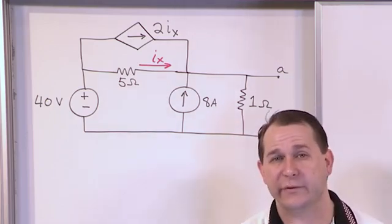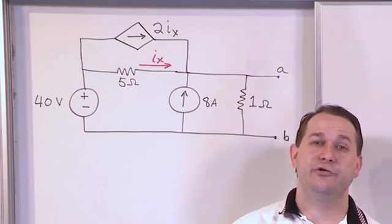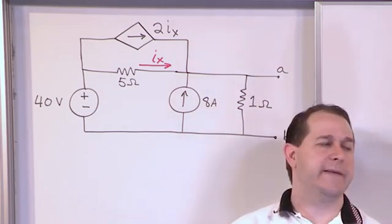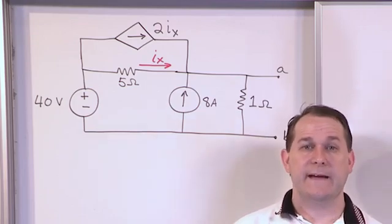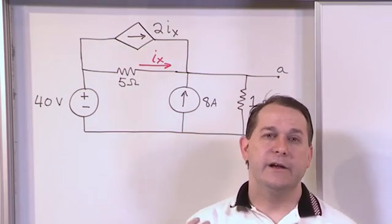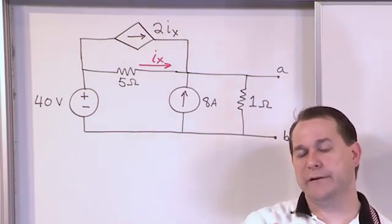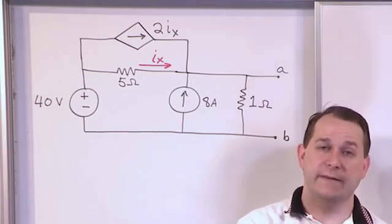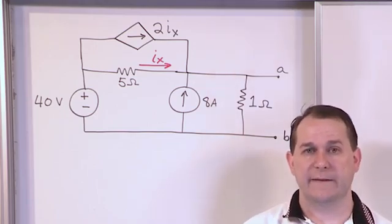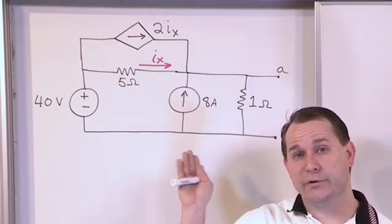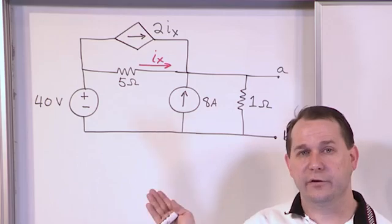And it turns out that for the Thevenin resistance, I actually showed you two different ways to find that. The first way is the bulletproof way that works for every circuit. And that's basically finding the short circuit current between A and B. And then using R is equal to V over I, basically Ohm's law, to use that knowledge along with the Thevenin voltage you have to figure out the Thevenin resistance. That's the bulletproof way that works for every circuit. And that's exactly what we're going to do in this section to solve this circuit.